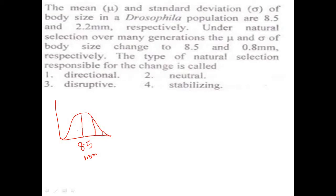Now, under natural selection over many generations, the mean and standard deviation of body size change to 8.5 and 0.8. After natural selection, we can see that the mean value remains the same at 8.5 millimeters.